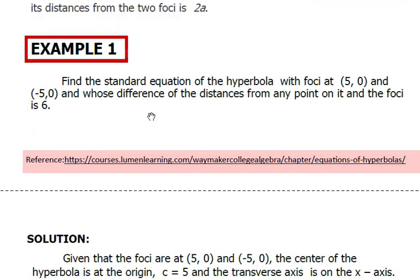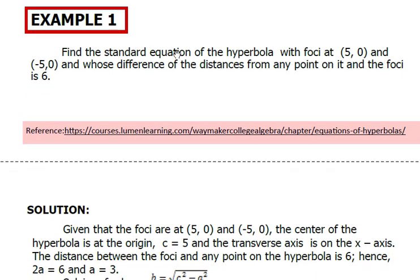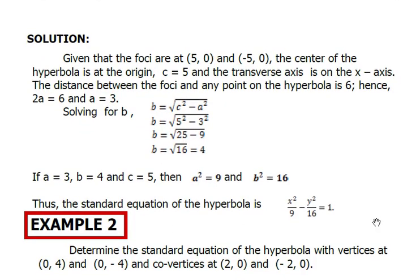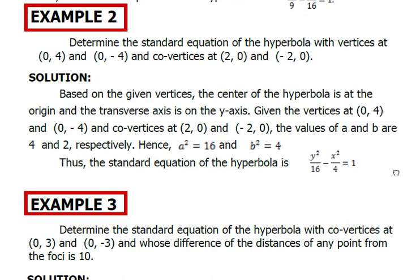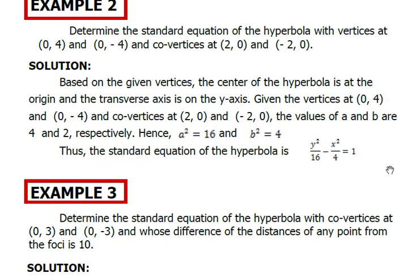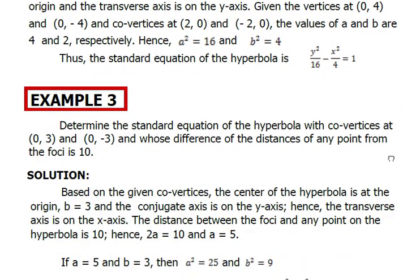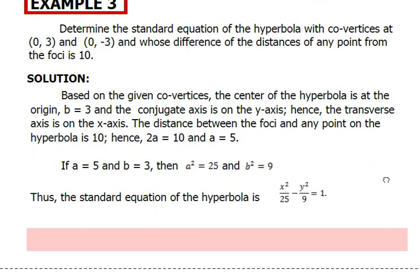I'll leave you Example 1: find the standard equation of the hyperbola with foci at (5, 0) and (-5, 0), and whose difference of distances from any point on it to the foci is 6. The solution is shown here, along with Example 2. You can pause this video if you wish to explore the explanation of these examples, because I'm excited to guide you through all the exercises.